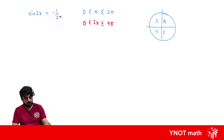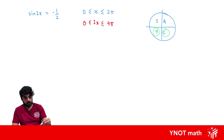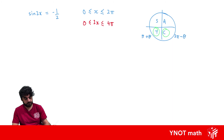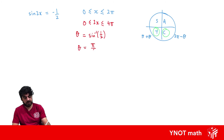We're looking at where values of sine are negative, which happens in the third and fourth quadrants. In the third quadrant we have π plus our base angle, and in the fourth quadrant we have 2π minus our base angle. We find the base angle: theta = inverse sine of ½, so theta = π/6. Now we can solve for 2x — careful not to solve for x yet, we're solving for 2x.